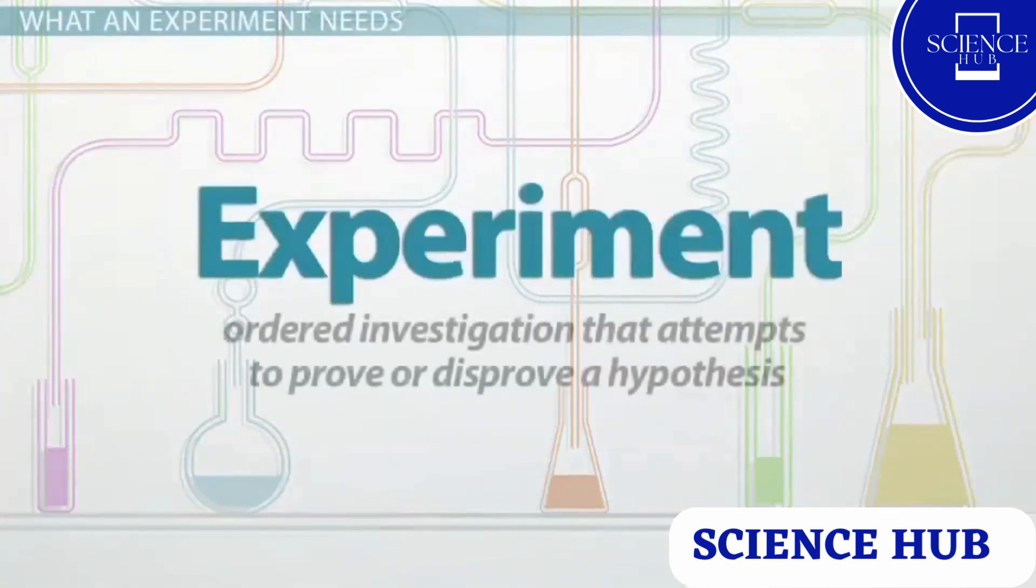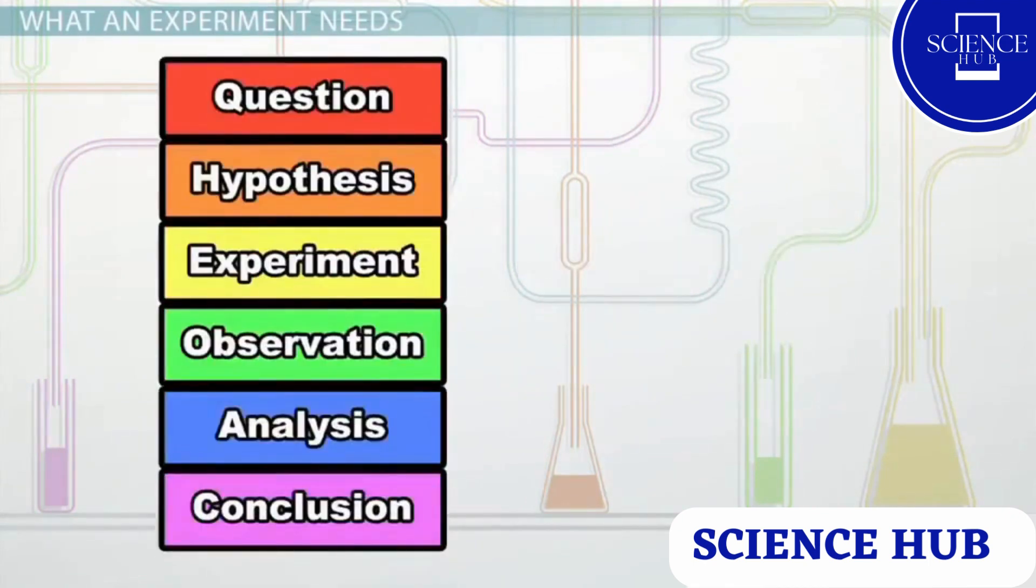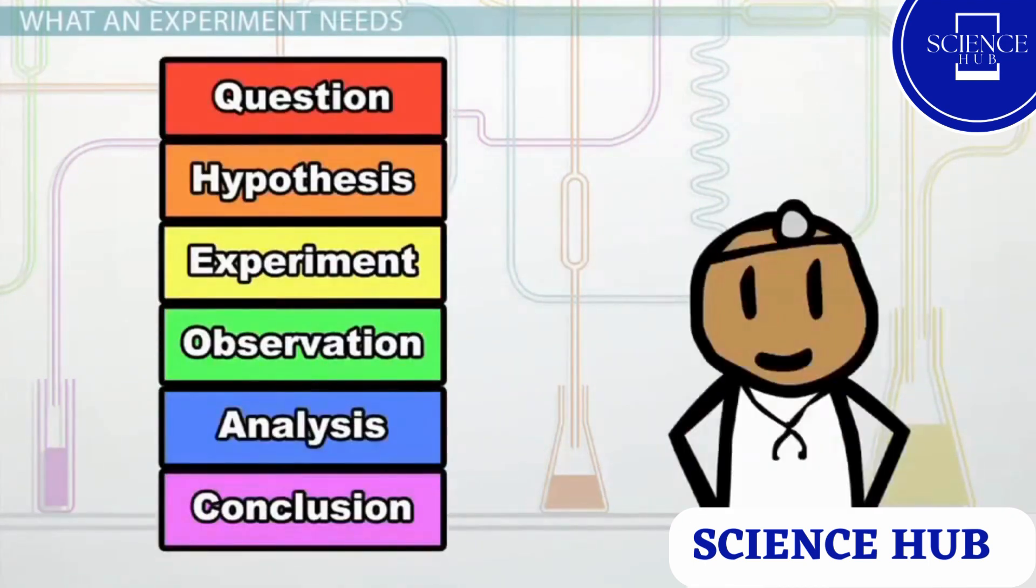A scientific experiment is an ordered investigation that attempts to support or reject a hypothesis, so its primary purpose is to test whether someone's prediction is correct. In designing experiments, scientists have to answer some pretty complicated questions, like: Does my experiment answer the question I'm trying to solve? Does it adequately test my hypothesis? Can I make observations about the results of my experiment? And will I be able to analyze those results? Finally, if I run this test, will it allow me to come up with some kind of conclusion?